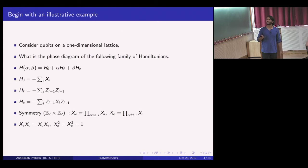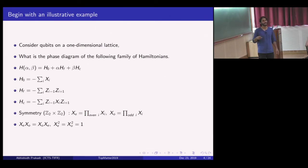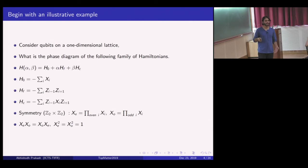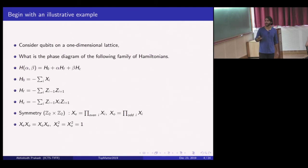I'm interested in mapping out the phase diagram for this family of Hamiltonians. The first piece is a very trivial paramagnet. The second is an Ising coupling, slightly different—it couples every other site, so you can think of this as two decoupled ferromagnetic chains, evens coupled to evens and odds coupled to odds. Finally, there's the cluster state Hamiltonian, discovered in the context of measurement-based quantum computation, which has a very interesting topological character that I'll be focusing on.